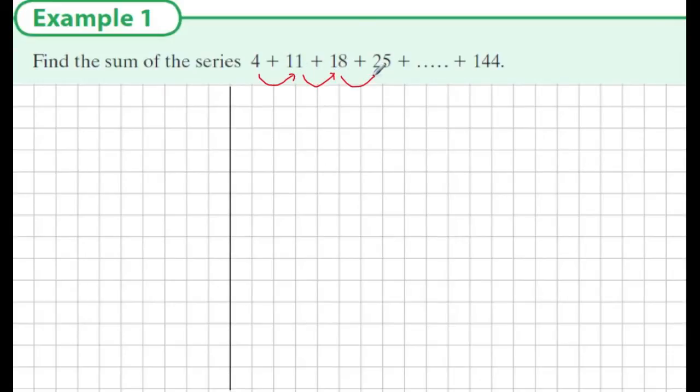But how do we get from one term to the next? By observation, we see if we add 7, we get from term 1 to term 2. So the common difference here is 7. Since it has a common difference, that tells us that this series is an arithmetic series because it has a common difference between each term.